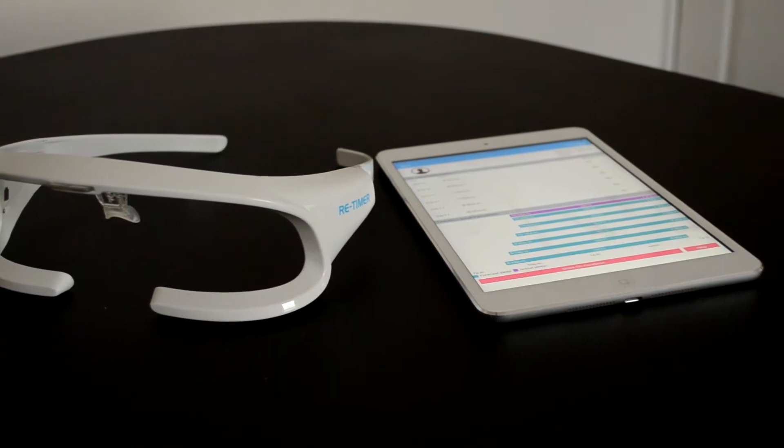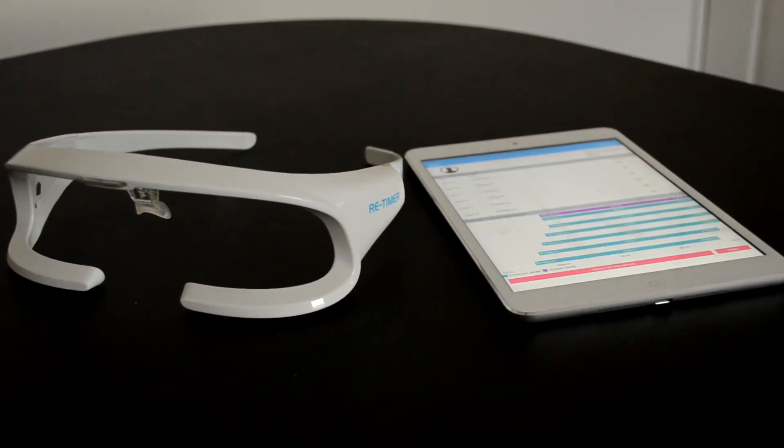The ReTimer helps you to overcome those bouts of jet lag when travelling, helps you to overcome seasonal affective disorder like we are getting here in the UK in winter at the moment, and helps to change your sleep cycle if, like me, you suffer from a bit of insomnia.